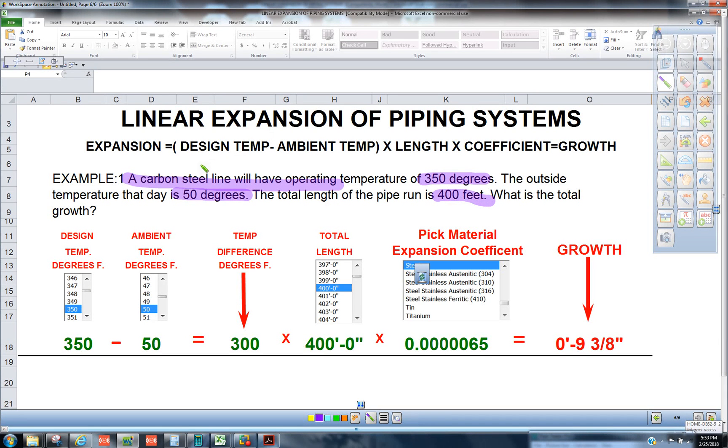So what we got to do is we have to take the design temperature minus the ambient temperature, giving us the temperature difference, by the linear footage, and then we're going to multiply it by this coefficient number.